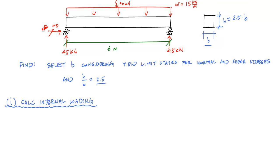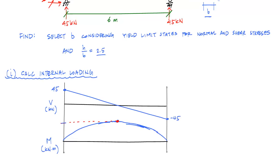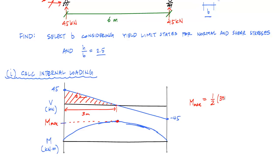Calculating internal loading means determining the internal axial, shear, and moments. We'll draw the shear-moment diagram — there's no internal axial loading. The shear diagram is linear: it goes up 45 kilonewtons for that reaction, then decreases linearly down to negative 45 kilonewtons at a rate of 15 kilonewtons per meter. Because the shear diagram is linear, the moment diagram is parabolic, and the maximum moment occurs where the shear is zero. This M_max equals the area of the shear diagram: one-half base times height, which is 3 meters times 45 kilonewtons, giving 67.5 kilonewton-meters.